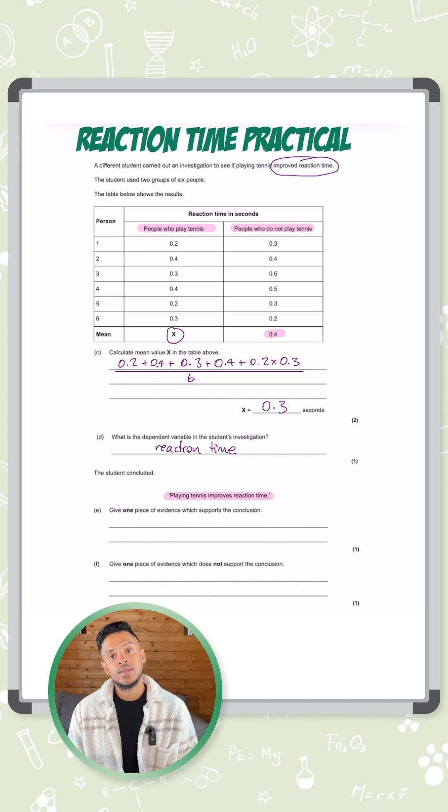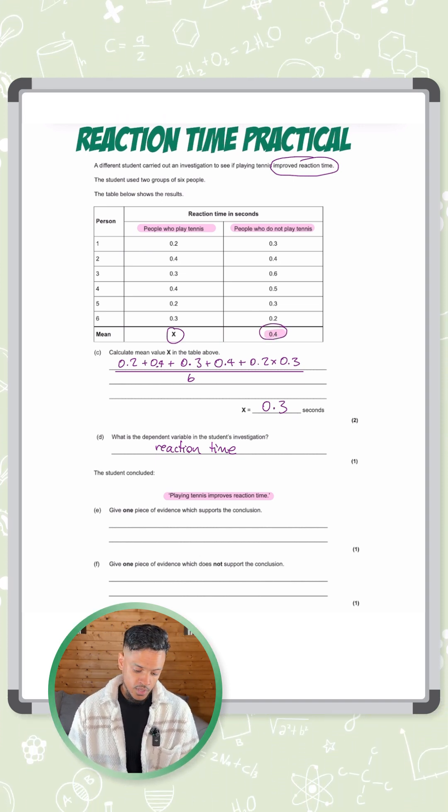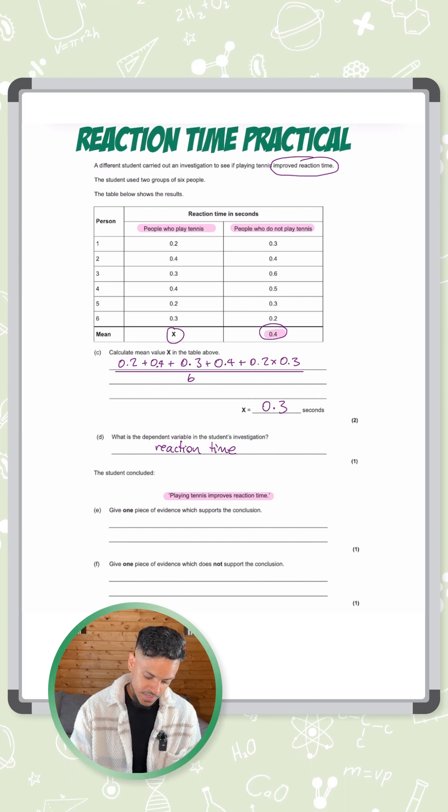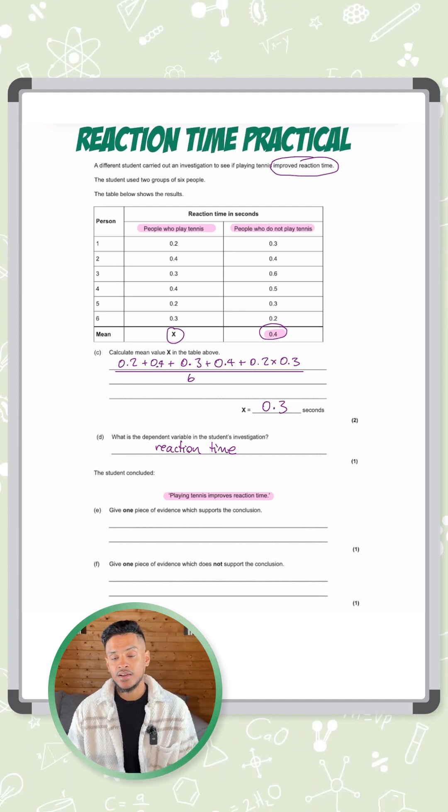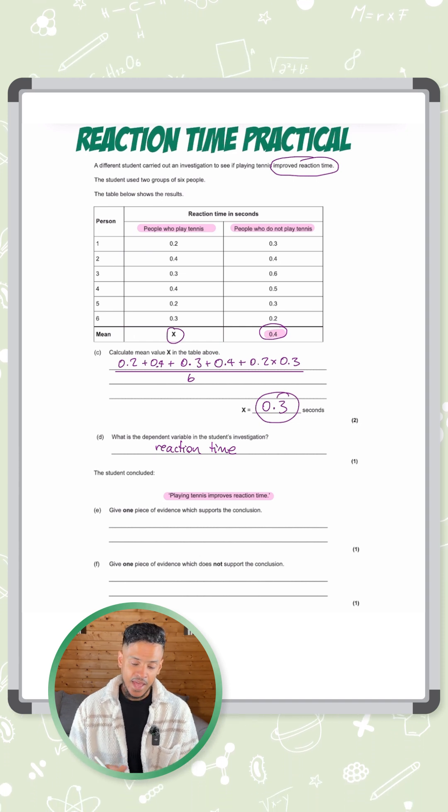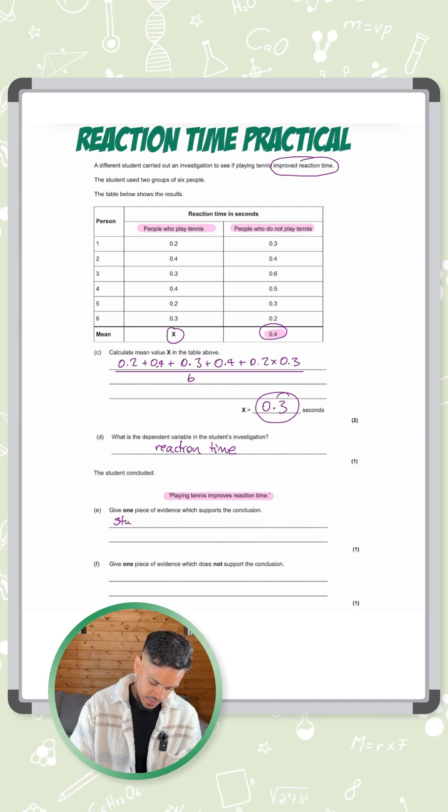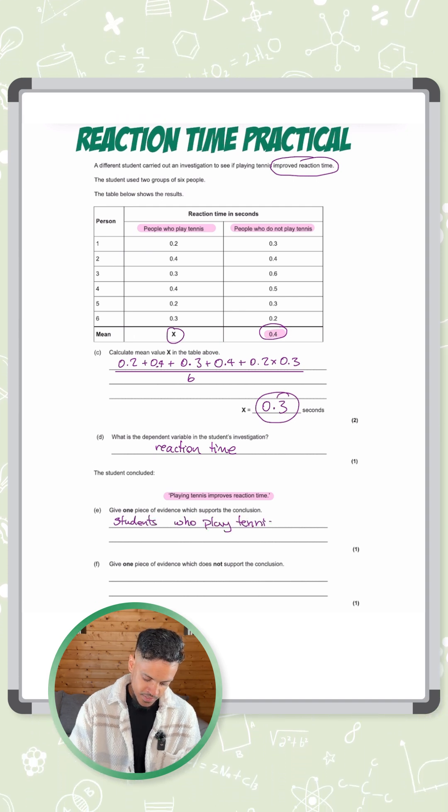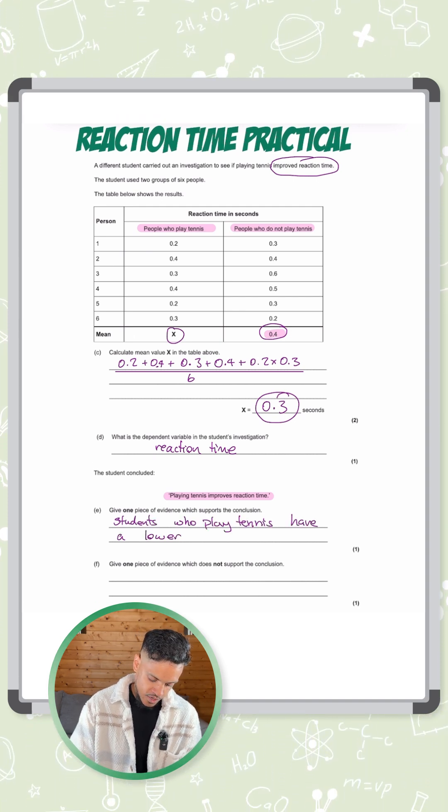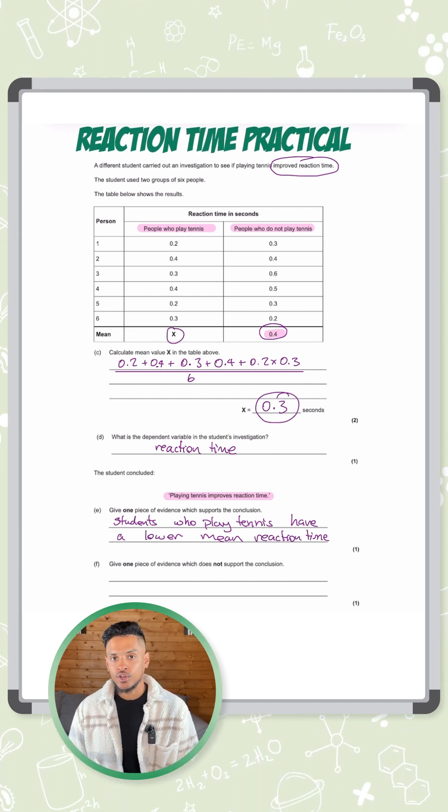The simple thing to do here is to compare the means. So people who don't play tennis have a mean reaction time of 0.4. But for people who do play tennis, the reaction time is what we just calculated, which is 0.3. So the people who play tennis have a shorter reaction time. That's an improved time. So we can say students who play tennis have a lower mean reaction time. That supports the conclusion.